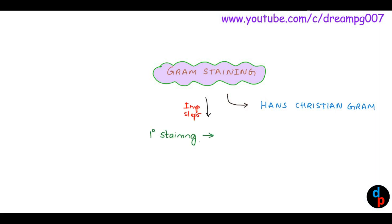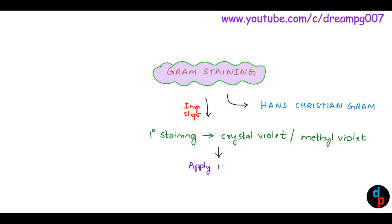First, the slide is stained with the primary stain. The primary stain in Gram staining is either crystal violet or methyl violet. After the primary staining, we apply a dilute solution of iodine to stabilize it. Later, we decolorize the slide with the help of ethanol and acetone.